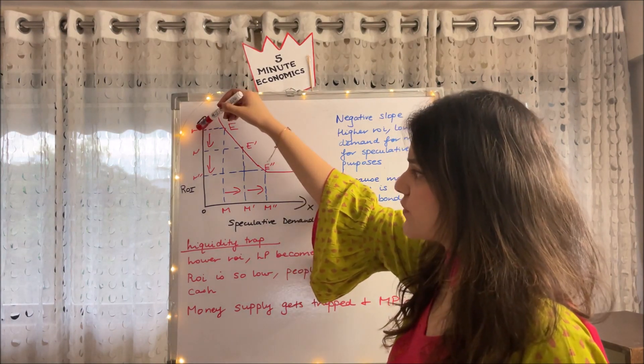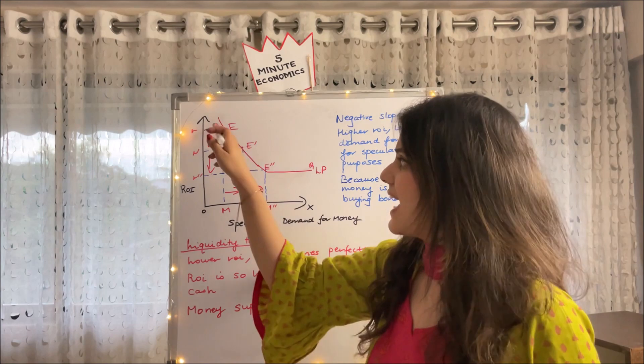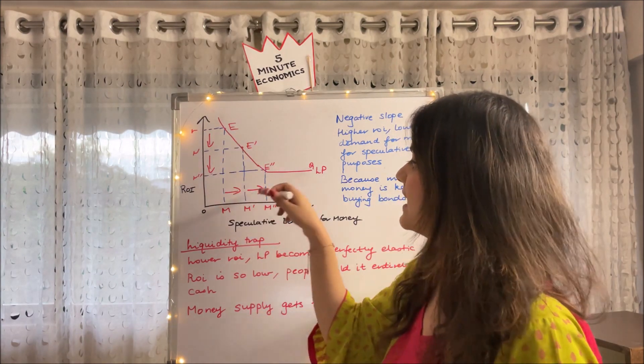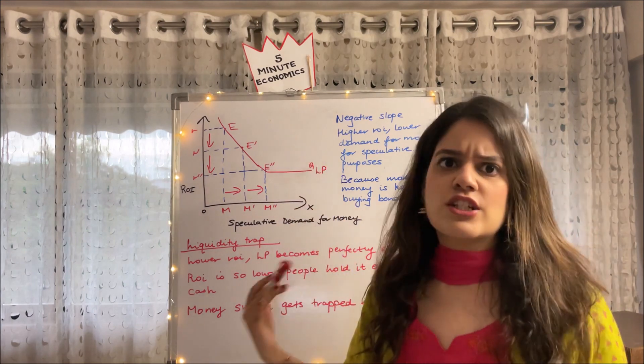We notice at a high rate of interest our speculative demand for money is very low, but as we go down our rate of interest keeps falling, our speculative demand for money keeps rising. Why do you think there is such a relationship?